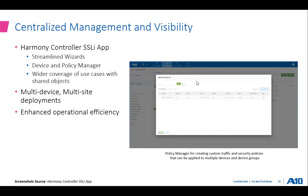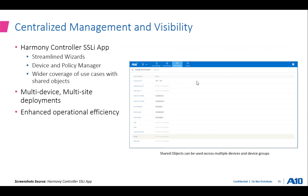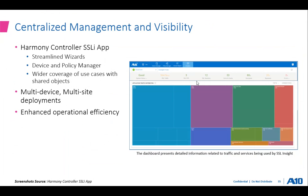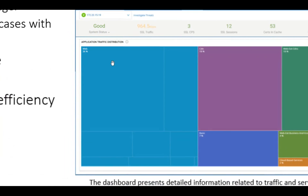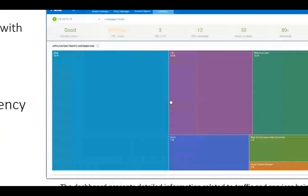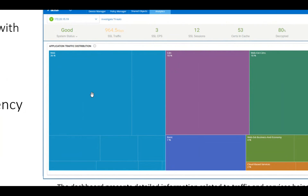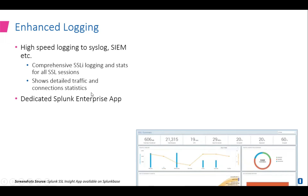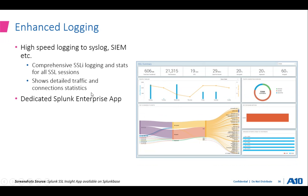Everything you can do from each individual appliance can be done and configured from Harmony Controller. These are some of the analytics available in Harmony Controller — you can see the amount of traffic hitting different applications and get all that information in one place.